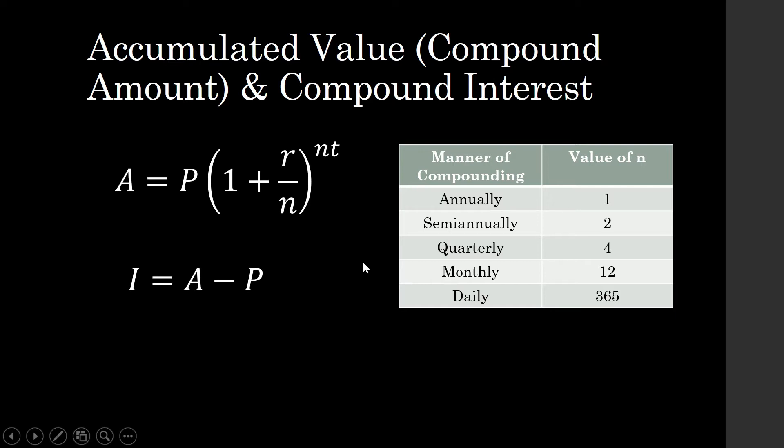When you say compounded semi-annually, it means our value for N is equal to 2. When it's quarterly, it's 4. When it's monthly, it's 12. When it is daily, it's 365.